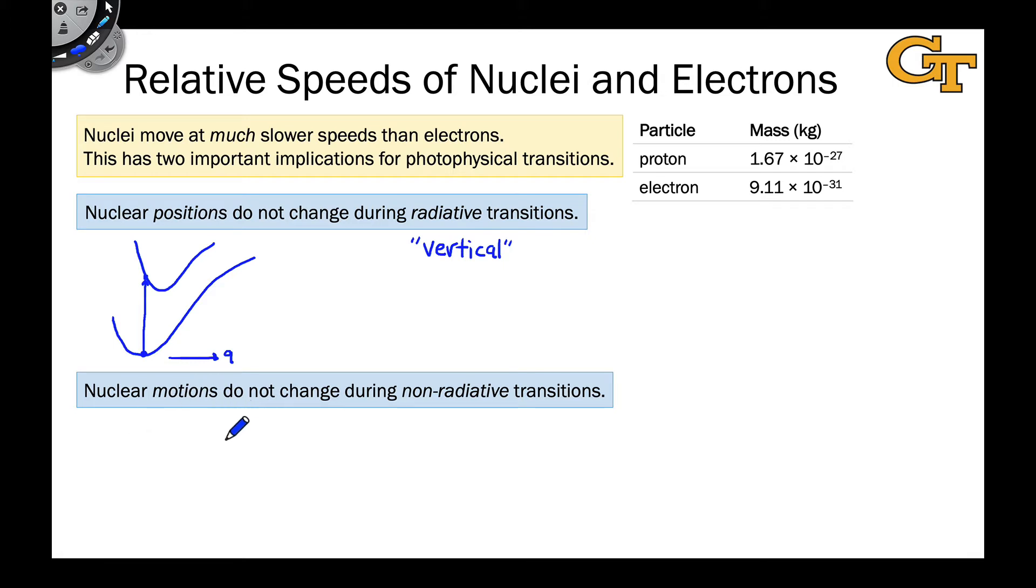This is because the transitions are so fast nuclear positions do not change throughout the entire transition. What about non-radiative transitions? Well, for non-radiative transitions, we assume that nuclear motions do not change. There are no abrupt changes in nuclear motion as a non-radiative transition takes place. In essence, and again in the language of potential energy surfaces, this means that non-radiative transitions are horizontal. They happen between states of equal energy as nuclei move through their typical vibrational motions without any abrupt changes in vibrational motion.